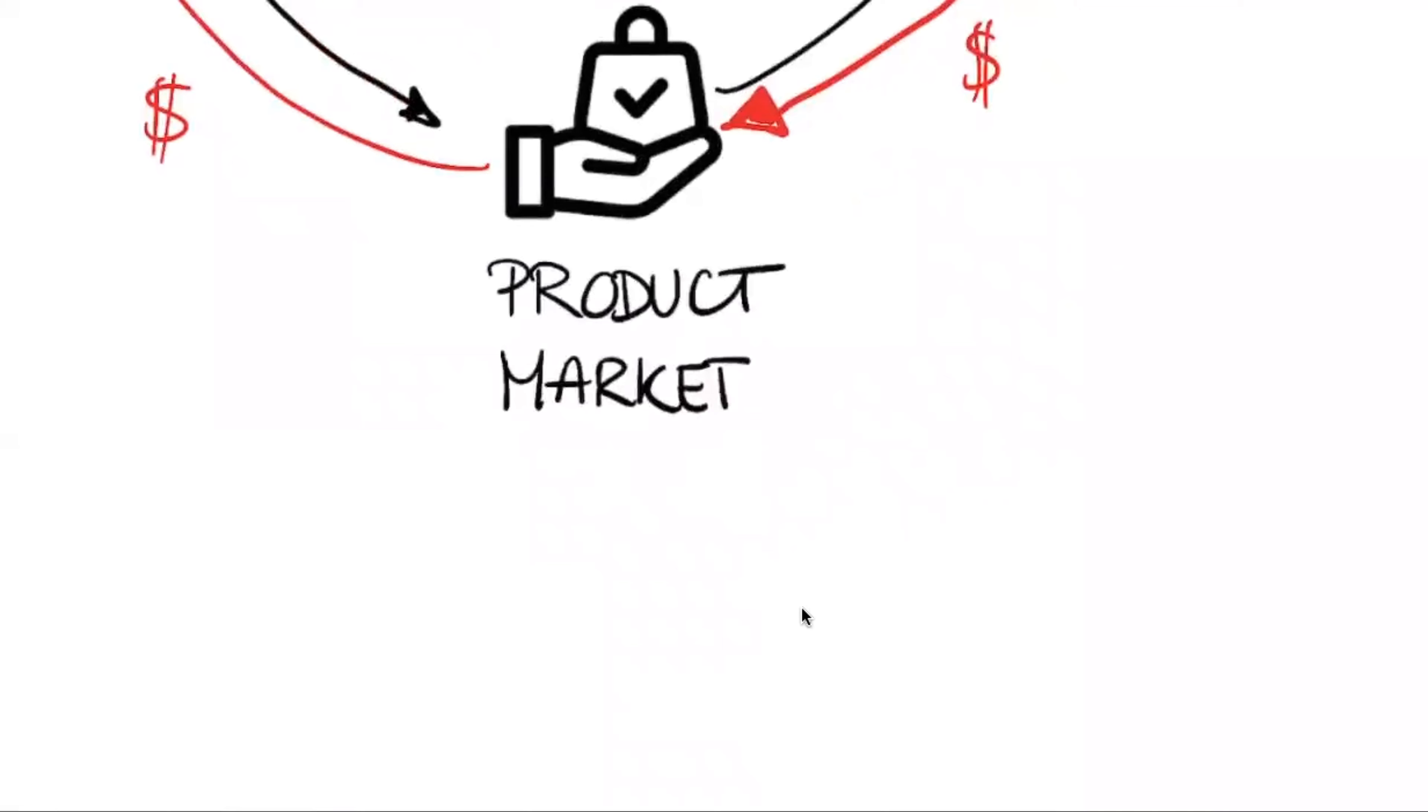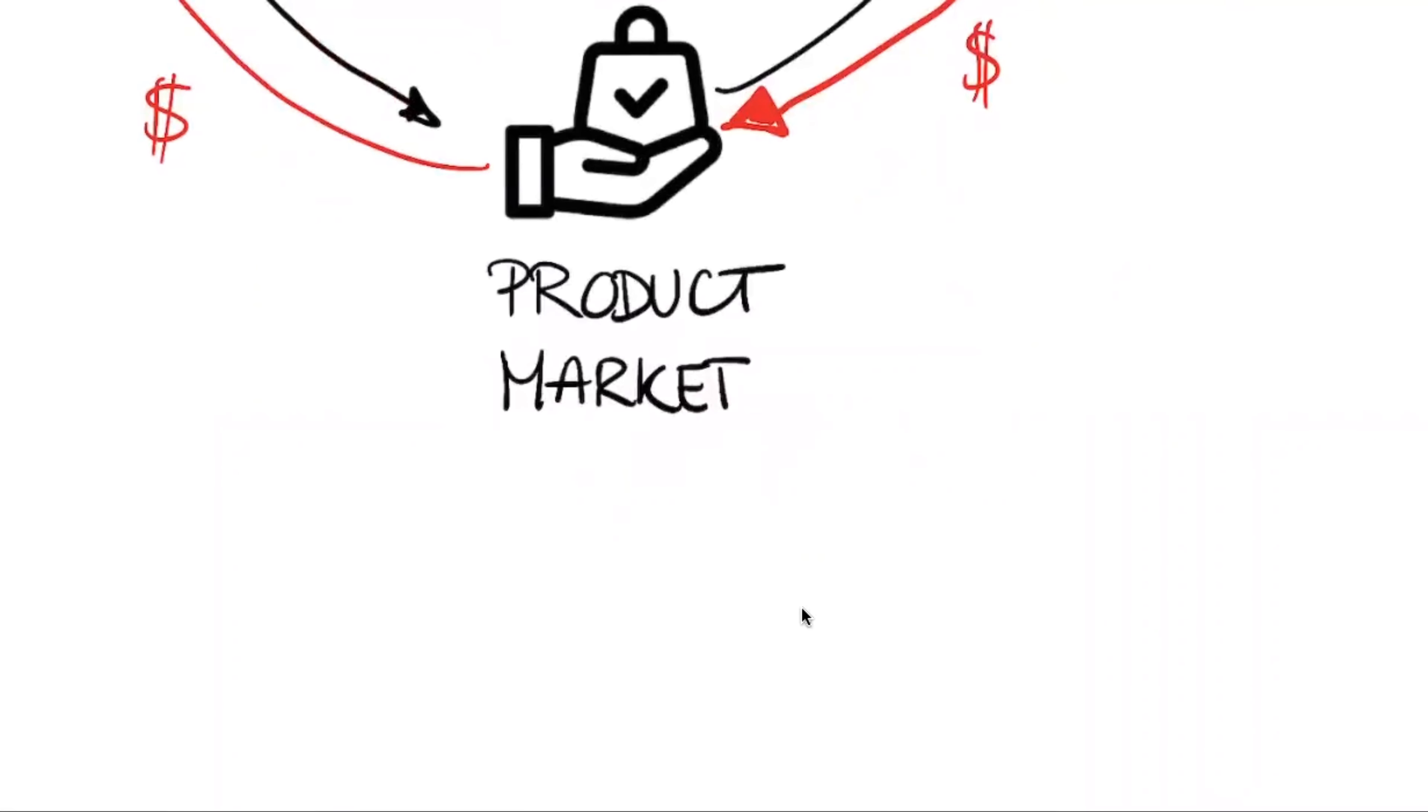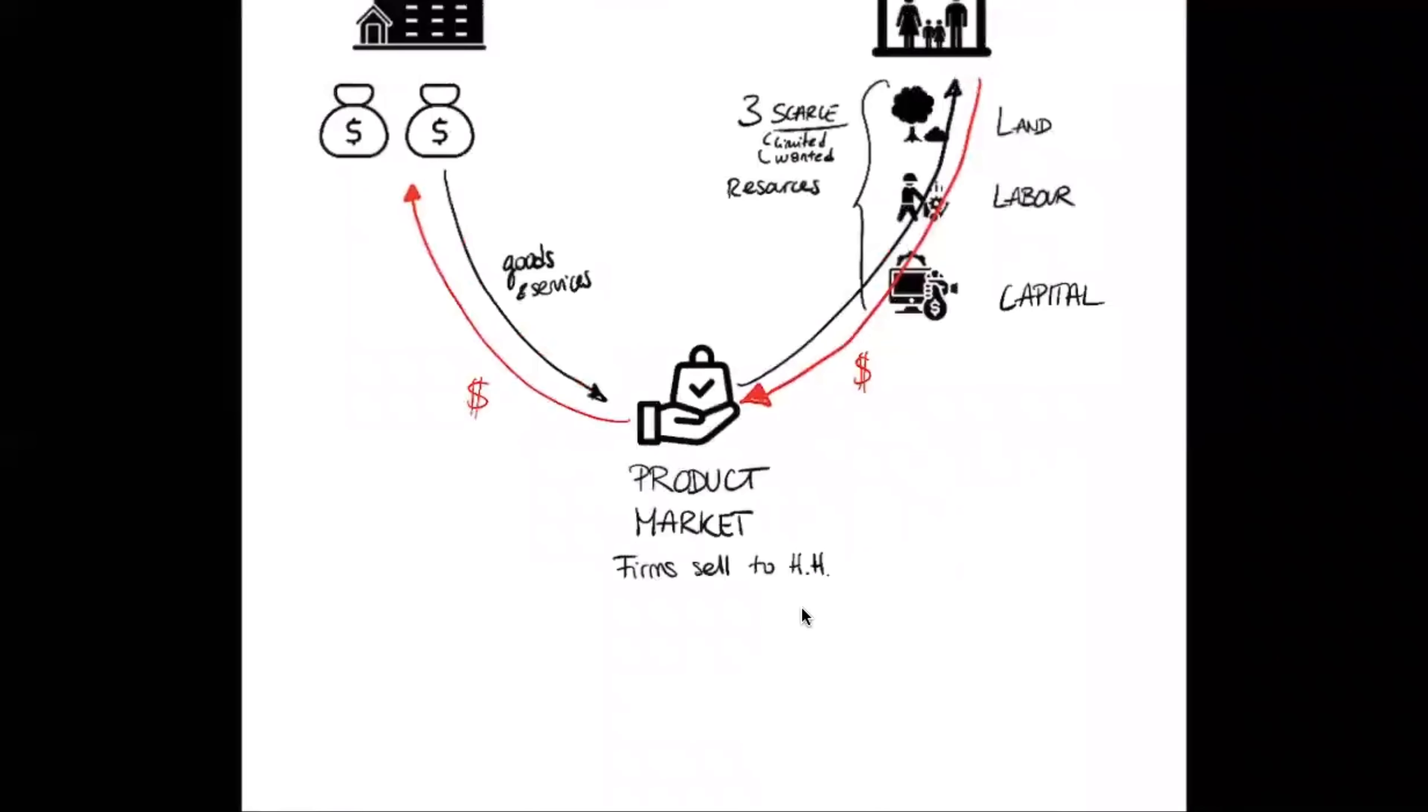So that's the overview of the circular flow. And for the product market, what happens? Basically, the firms sell to households. They sell goods and services. That's what's happening.